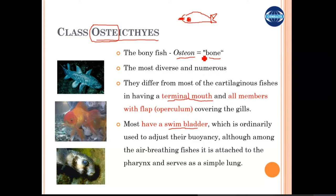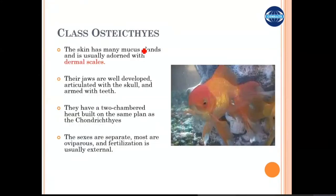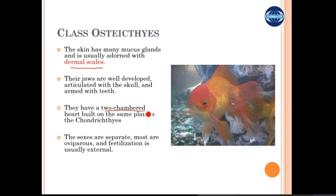They also have a swim bladder, which is always present in this type of fish. The skin in Osteichthyes has many mucus glands which produce mucus and is also covered with scales that are dermal in origin. The jaws are well developed, articulated with the skull, and armed with teeth. They have a two-chambered heart, the same as in Chondrichthyes.